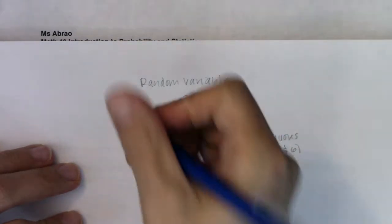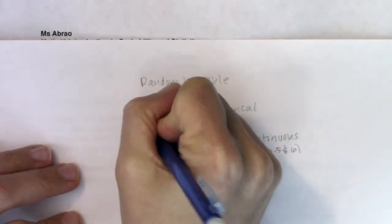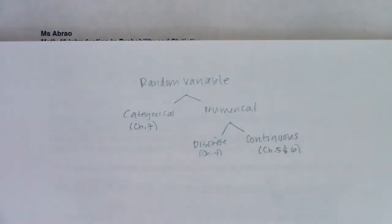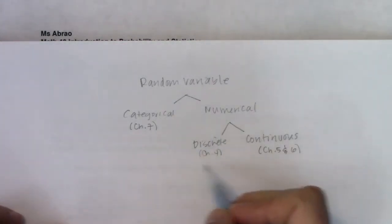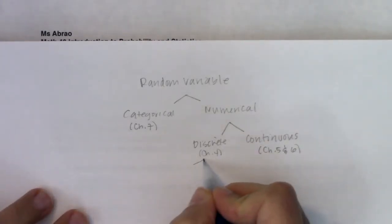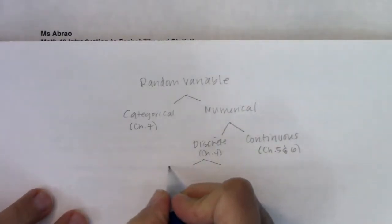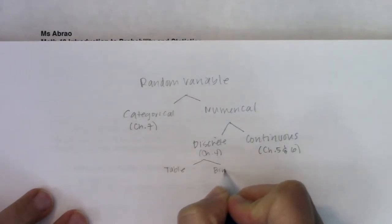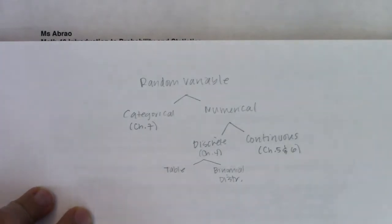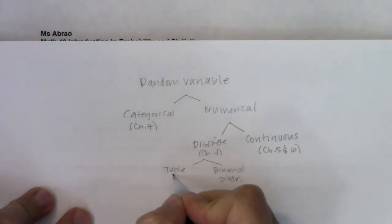Then we'll head back over to categorical variables in chapter 7. So that's how the next chunk of material is going to play out. In chapter 4, we're going to have two main types of problems: I'm either going to give you a table, or you're going to have something called a binomial distribution. I know this is a lot of vocab up top, but I just want you to see where we're going with this overall flowchart.